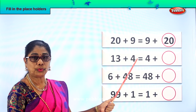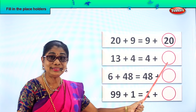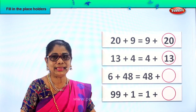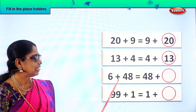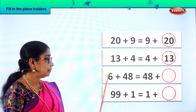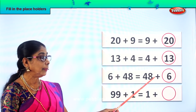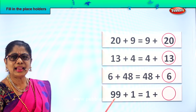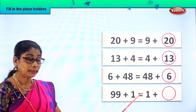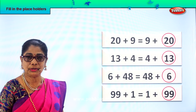Look at the next sum: what is thirteen plus four? Thirteen plus four is equal to four plus thirteen. What is six plus forty-eight? Six plus forty-eight is equal to forty-eight plus six. What is ninety-nine plus one? Ninety-nine plus one is equal to one plus ninety-nine. Did you enjoy filling in the placeholders? Good.